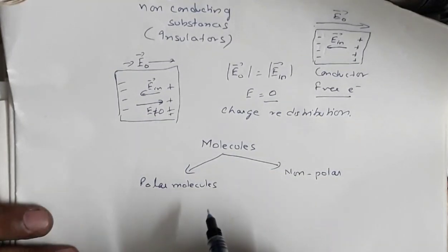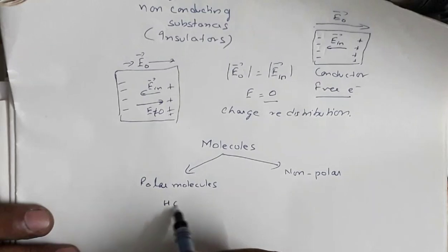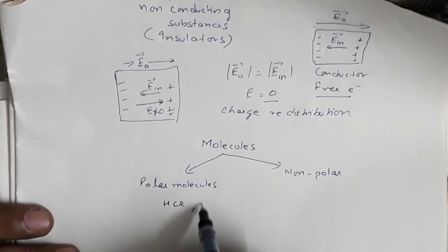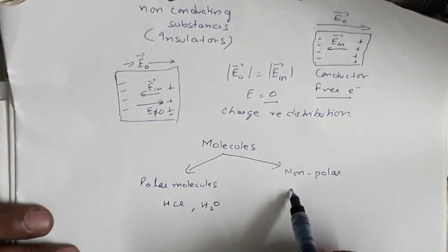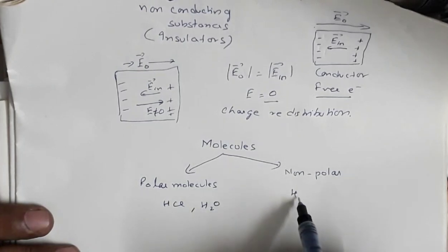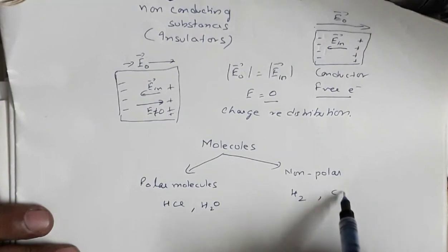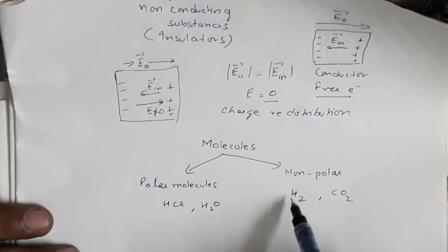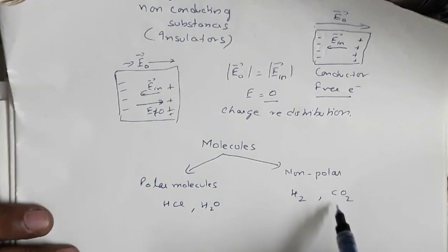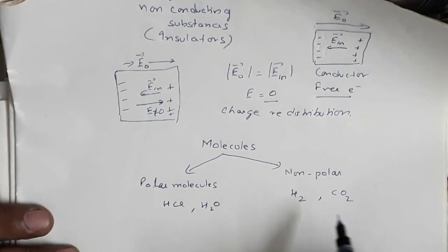Examples of polar molecules are HCl and water (H₂O). Examples of non-polar molecules are hydrogen gas and carbon dioxide. Because of the symmetry of the hydrogen molecule and carbon dioxide molecule, they have zero dipole moment in the absence of an electric field.